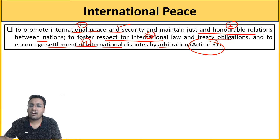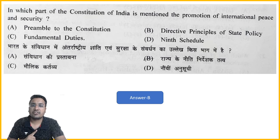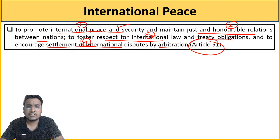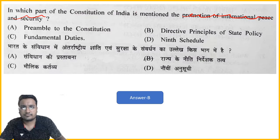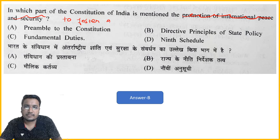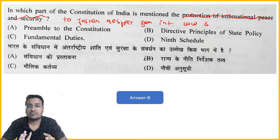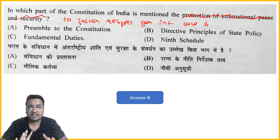Article 51 covers: international peace and security, just and honorable relationships between nations, respect for international law and treaty obligations, and encouraging settlement of international disputes by arbitration — four elements. The question could also be framed as 'to foster respect for international law' — ultimately the answer remains the same. The article number can also be asked, so you must know Article 51 by heart. DPSP, Fundamental Rights, and Fundamental Duties articles should be memorized.